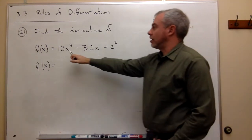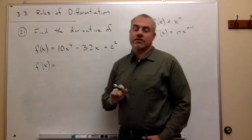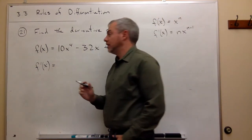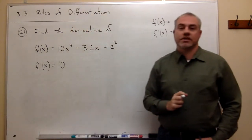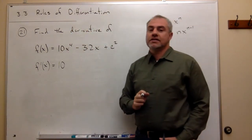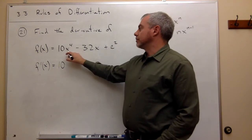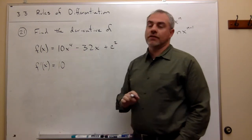Using the power rule, 10 is a constant, so 10 doesn't really have to be that involved in the derivative process. The constant just sticks around. Then I say, okay, I need to also multiply that by the derivative of x to the fourth.